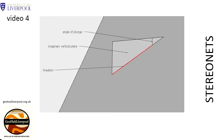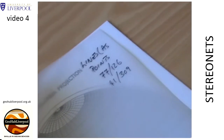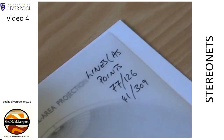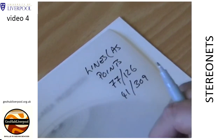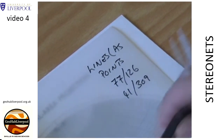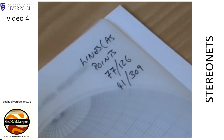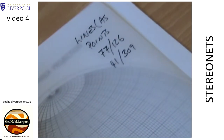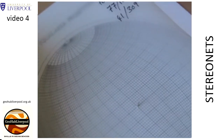In this example there are two lines being plotted. One line plunges at an angle of 77 degrees in the direction 126 degrees. The other line plunges at an angle of 41 degrees in the direction 309 degrees.